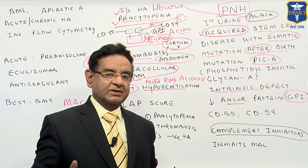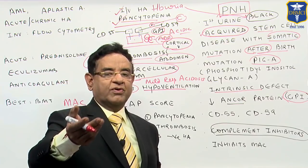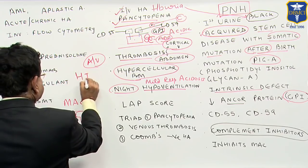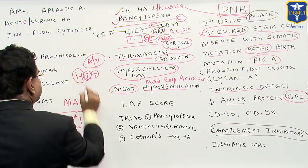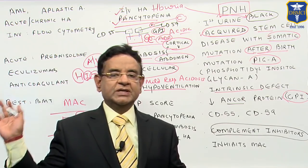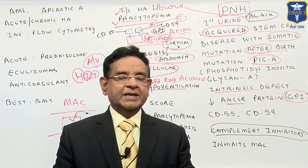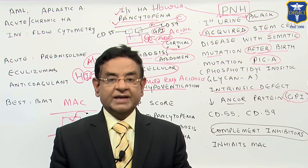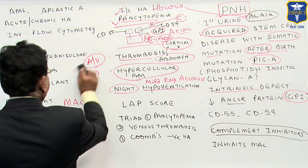One more important condition to note: HIT — heparin-induced thrombocytopenia. In heparin-induced thrombocytopenia, the cause of thrombocytopenia is autoimmune. The platelet count is low, but there is increased clot formation in both arteries and veins. The bone marrow is also hypercellular there. This is additional knowledge for your information.